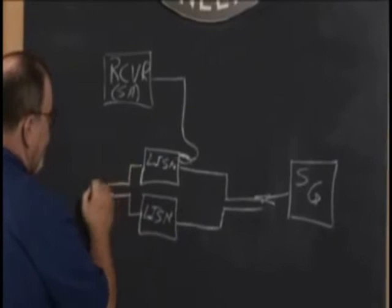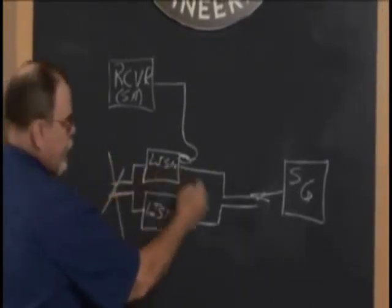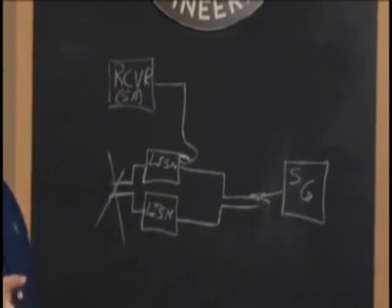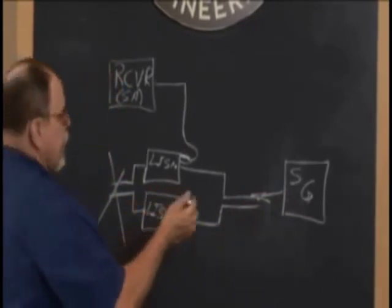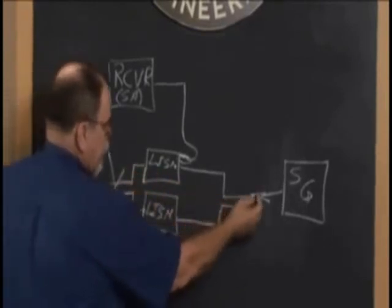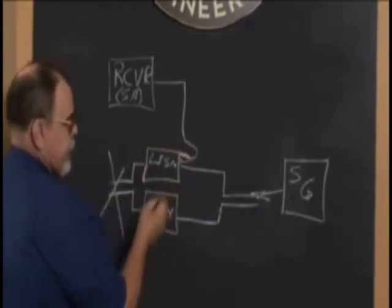Inject a signal of a known voltage into the LISN. Note, make sure that power is not applied. Because if you have primary power plugged in to your signal generator, you will not last very long. It's called rapid disassembly. So this is opened up and we inject the signal and we measure the signal we're injecting to make sure the receiver measures that properly.